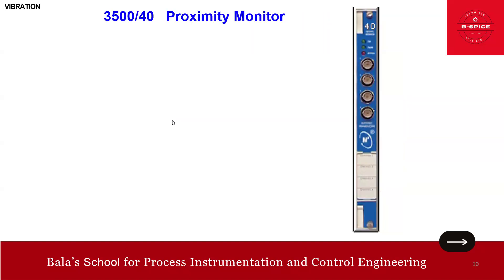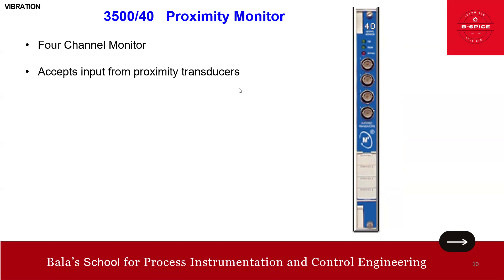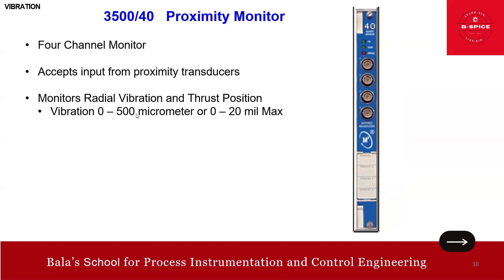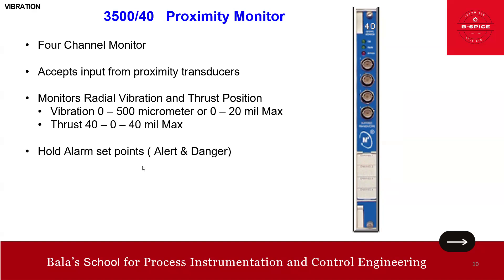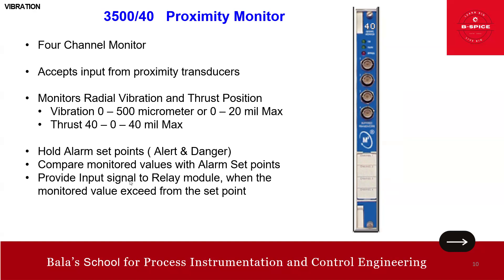Module 40 is the proximity monitor — again a four-channel monitor. It accepts inputs from proximity transducers and monitors radial vibration and thrust position. Radial vibration range is 0–500 micrometers (0–20 mil max), and thrust range is 0–40 mil max. It holds alert and danger alarm setpoints, compares monitored values against them, and sends input signals to the relay module when the monitored value exceeds the setpoint.